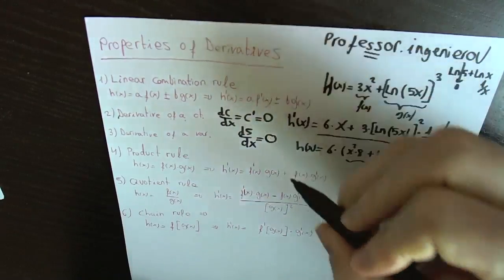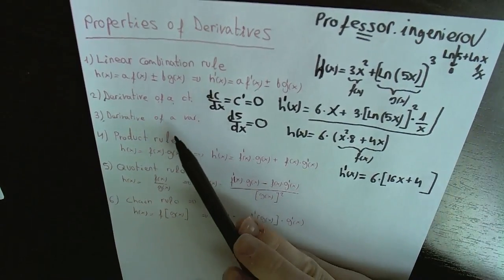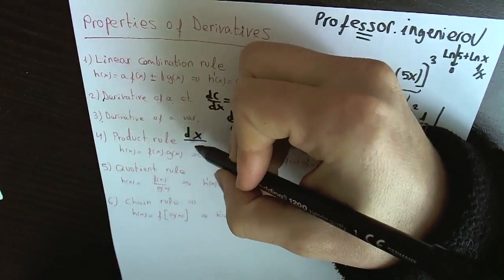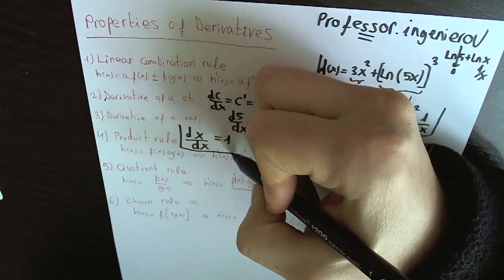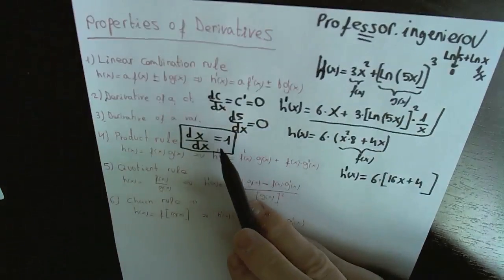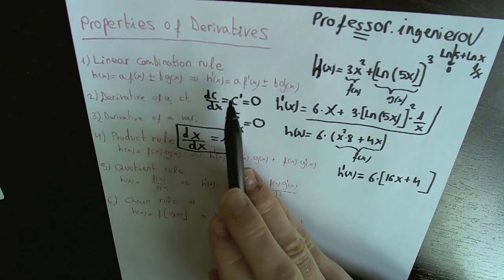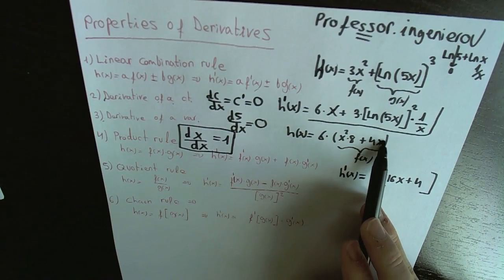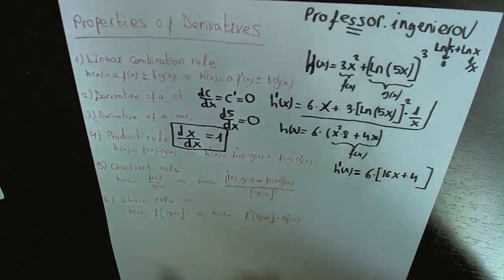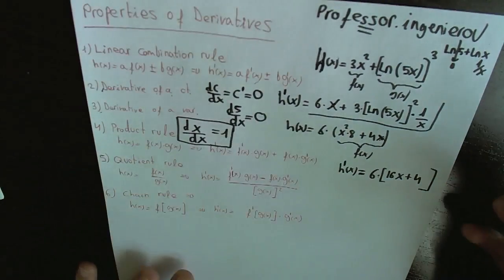Property number three: the derivative of a variable. If we have the variable x and we differentiate it with respect to the same variable x, it is always one. This is an important property. That is why the derivative of 4x is 4: the constant 4 stays outside, and the derivative of x with respect to x is one.